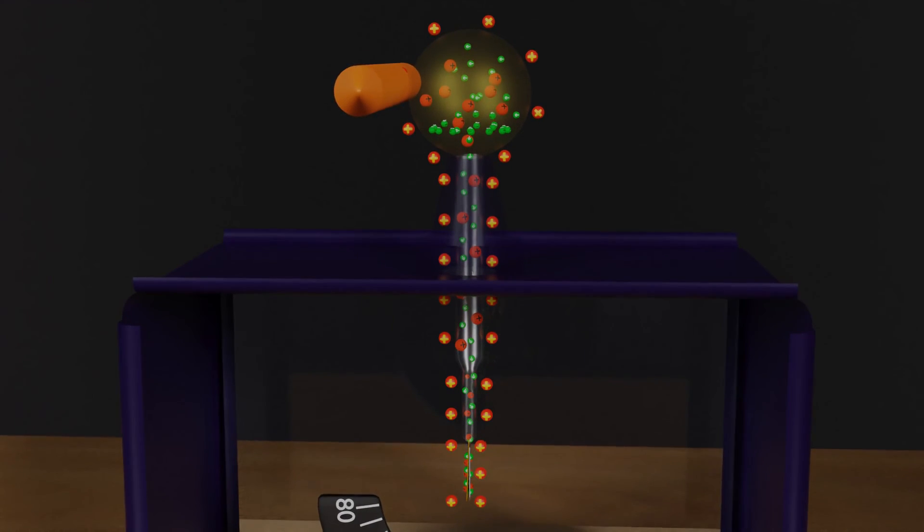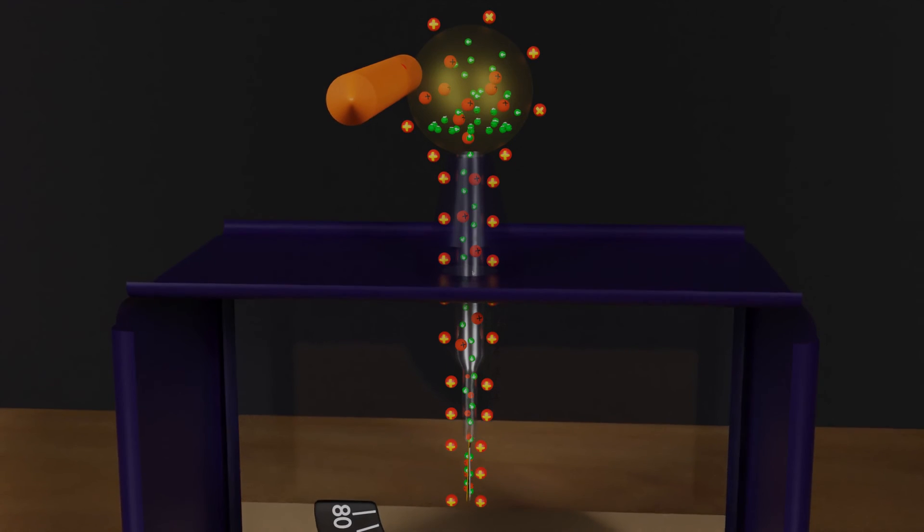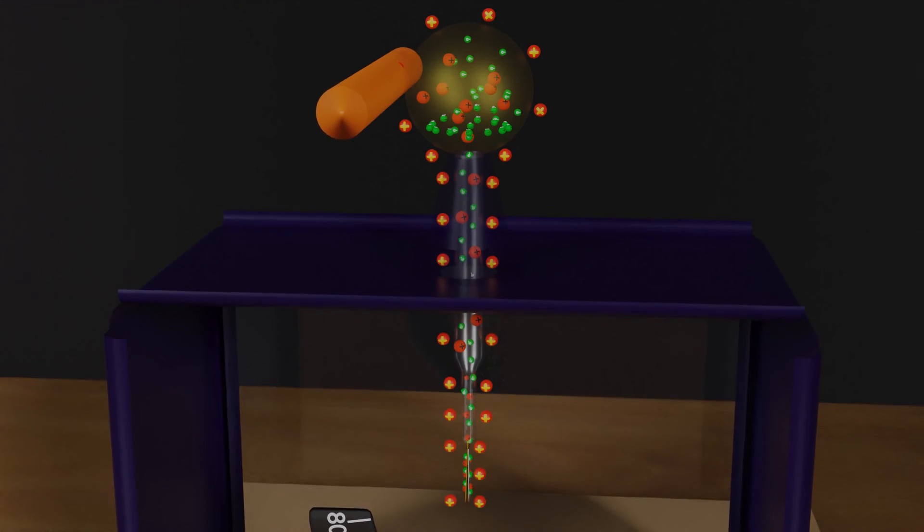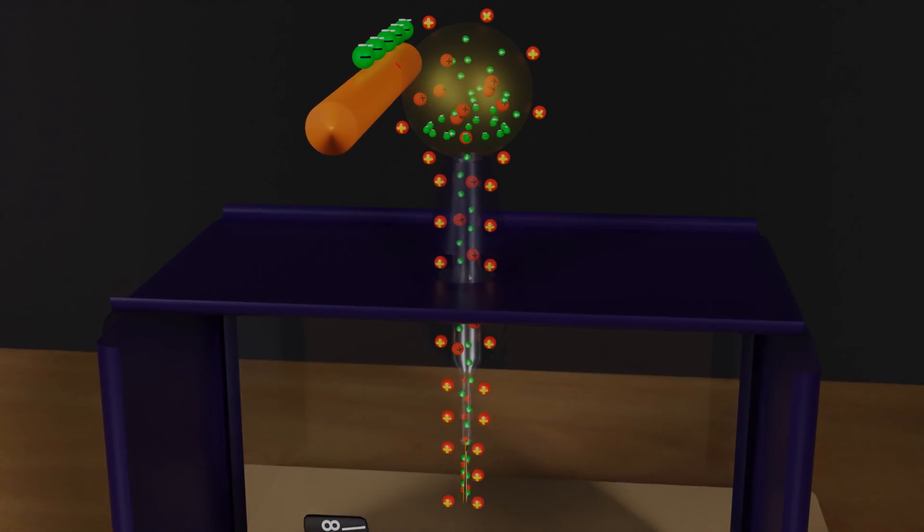It means that the body was charged with an opposite charge to that of the electroscope, which means the body will have negative charge in this case.